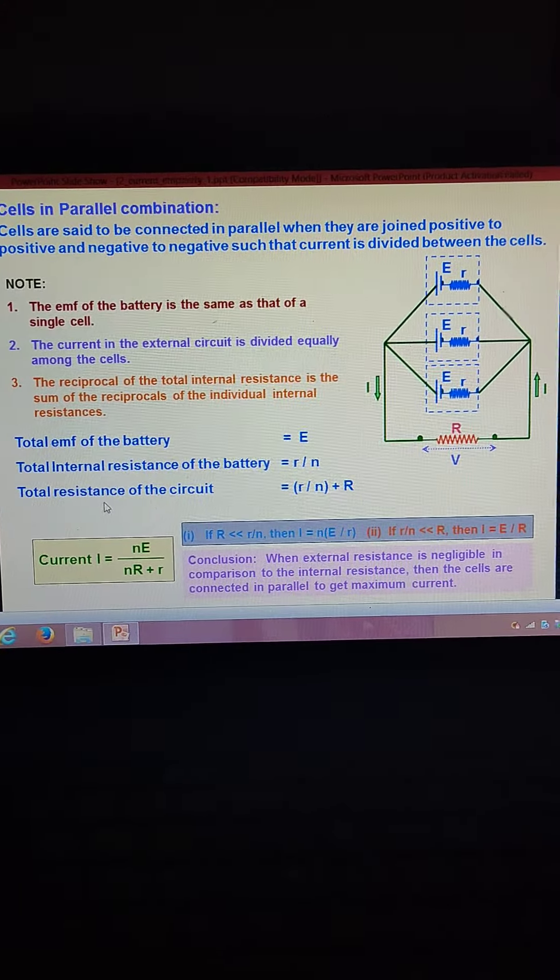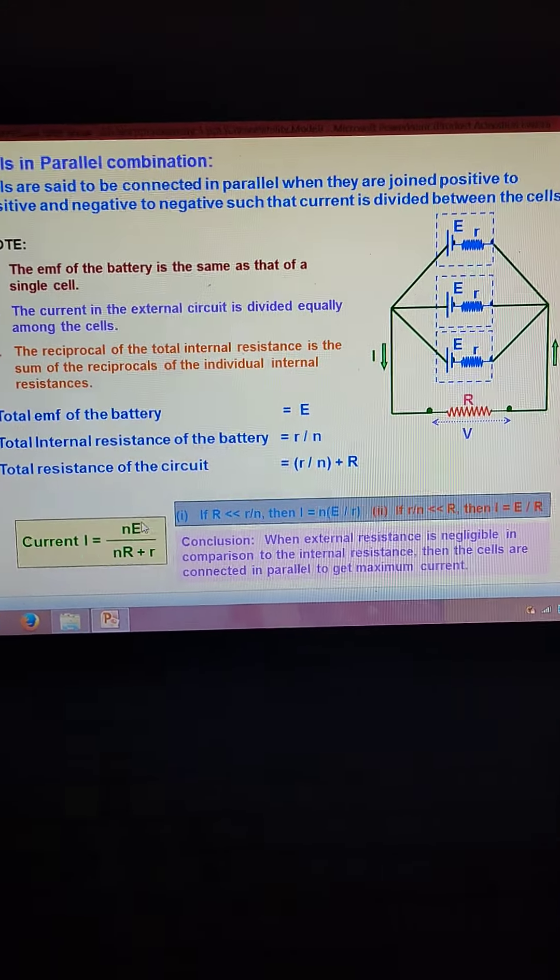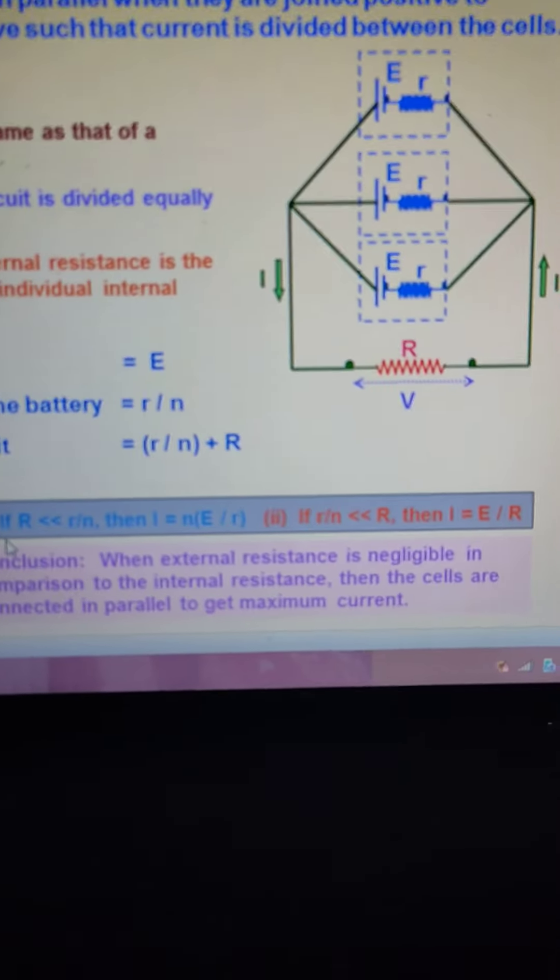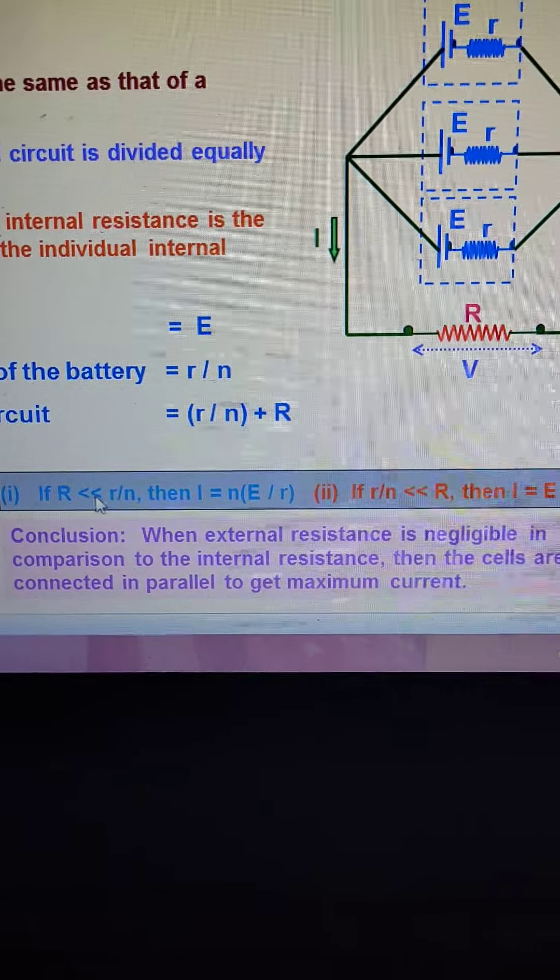r by n. The total resistance of the circuit is r by n plus R, and the current is equal to nE upon nR plus R. Now from this, if R is less than R by